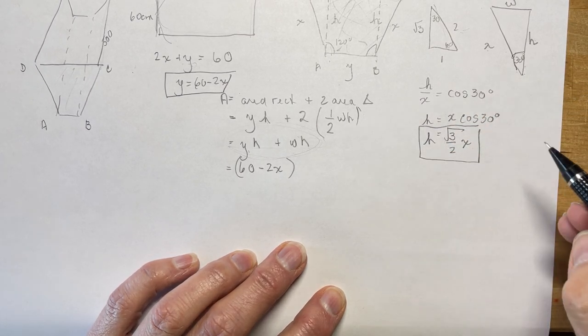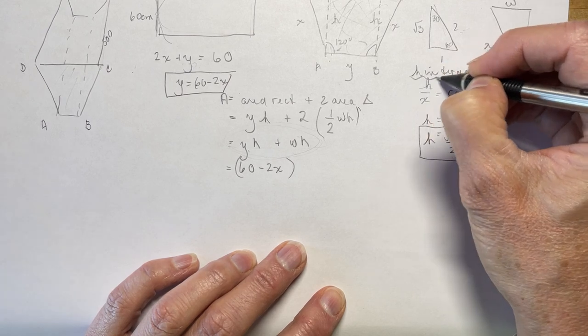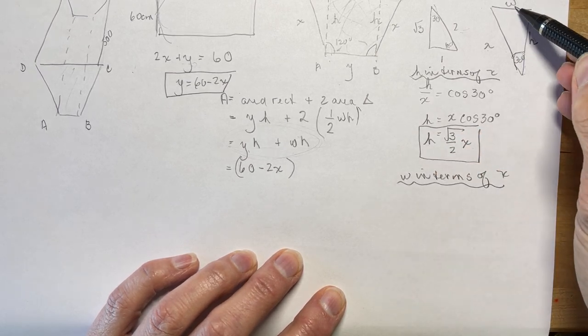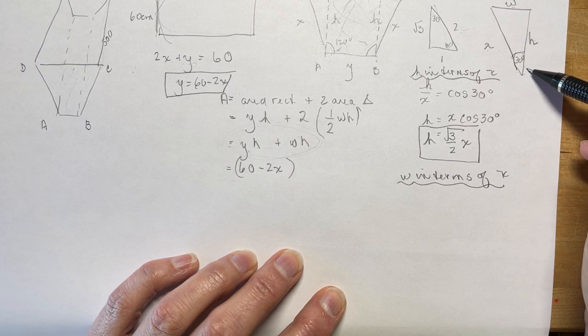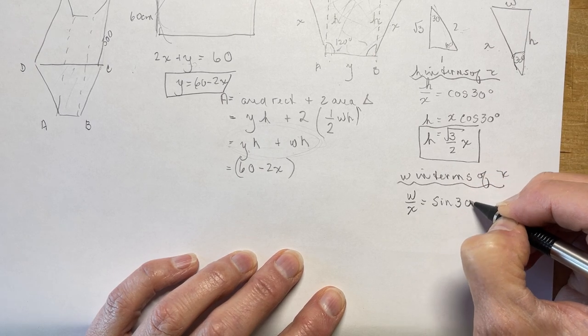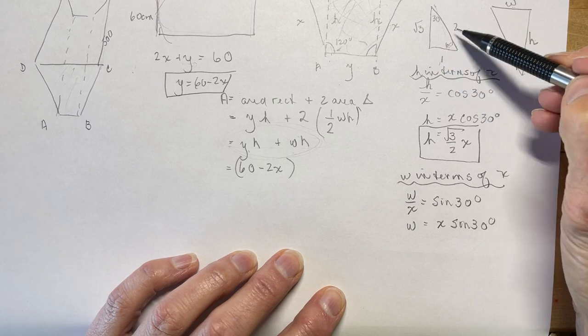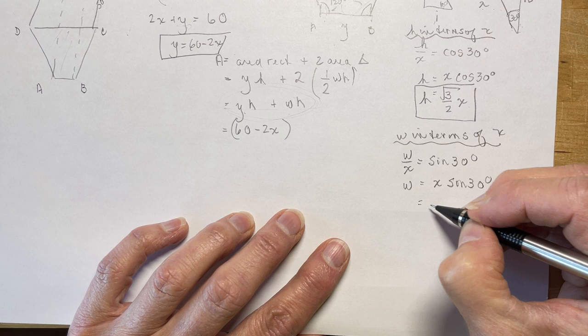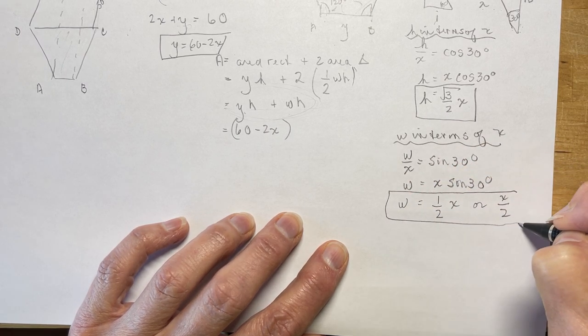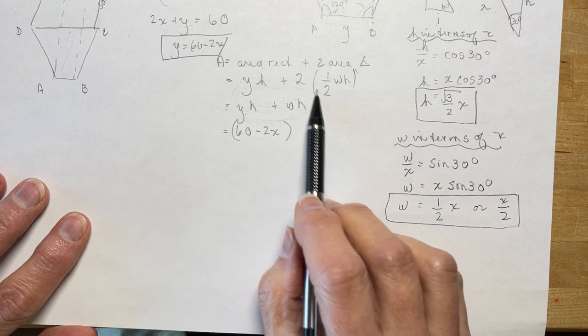Now I'm going to find w in terms of x. So w here, that would be the opposite over the hypotenuse, which would give you the sine of 30 degrees. So w over x is equal to sine 30 degrees. So w is going to be x times the sine of 30, and sine of 30 is one half. So w is going to be one half x or x over 2.